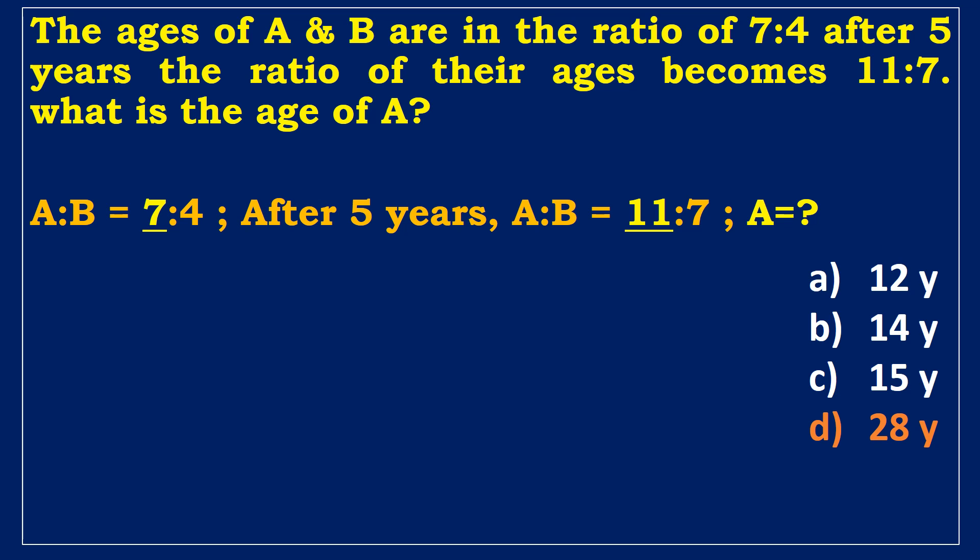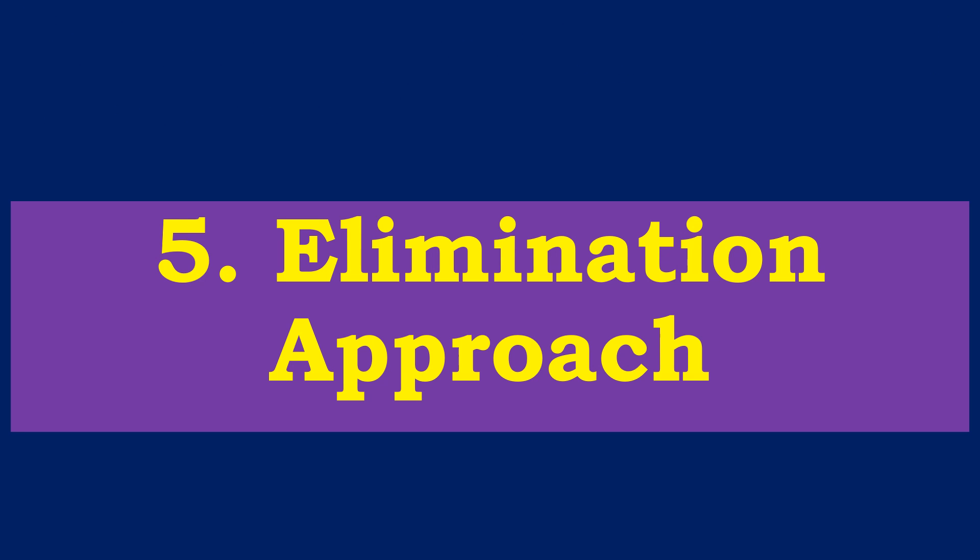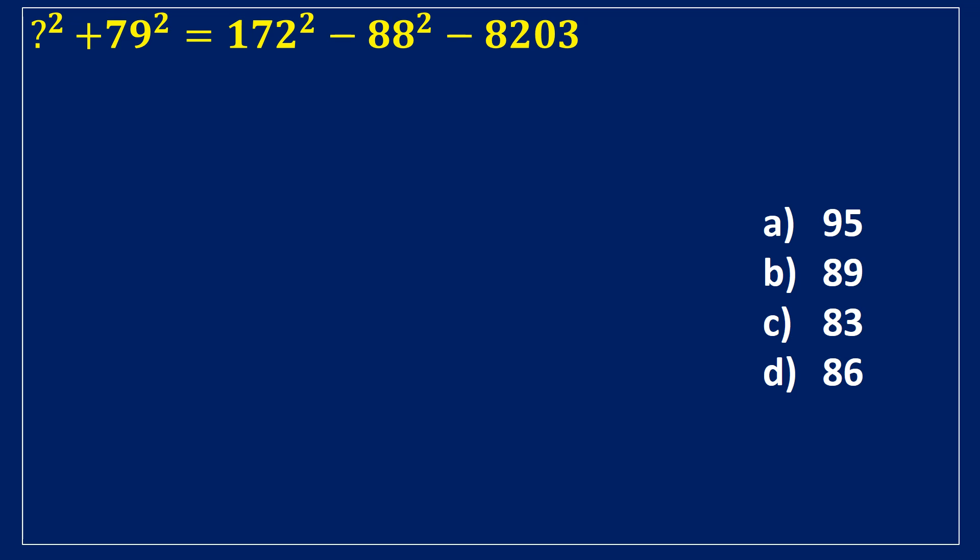Model 5. Elimination approach. Question mark square plus 79 square is equal to 172 square minus 88 square minus 8203. We may solve this problem in a smart way by eliminating answer options with the help of the unit digit method. We know that the number ends with 9, and the square ends with 1. Similarly, the number ends with 2, and the square ends with 4. The number ends with 8, and the square ends with 6. In 8203, the number ends with 3.